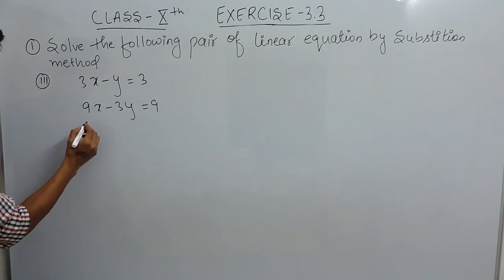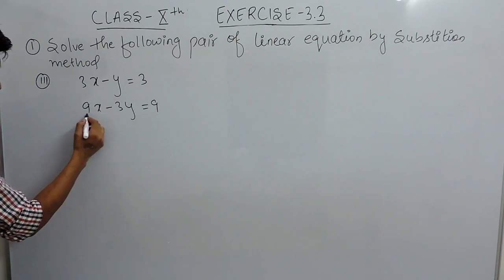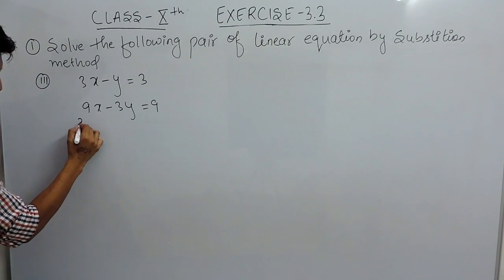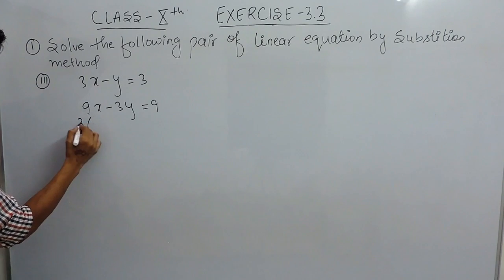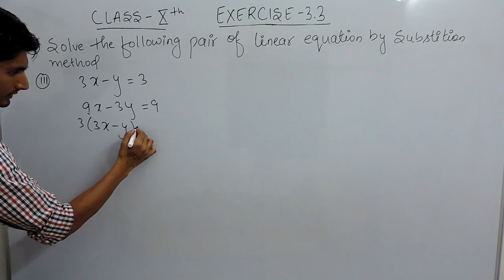First of all, let's make this equation a bit smaller. Take 3 common from this side so 3 when common from 9x and 3 when taken out, this will be y.